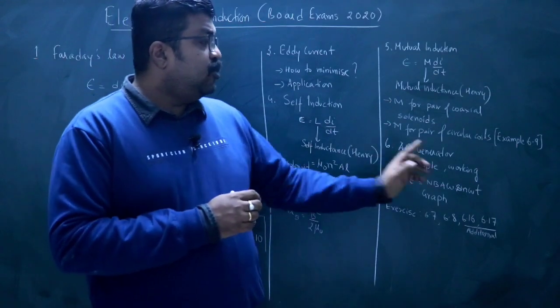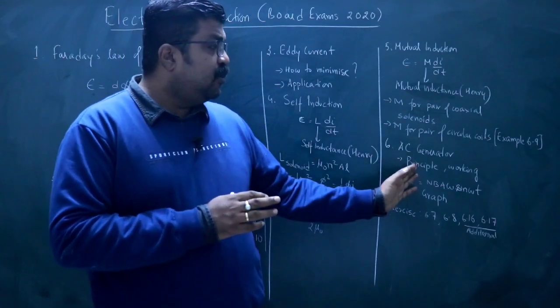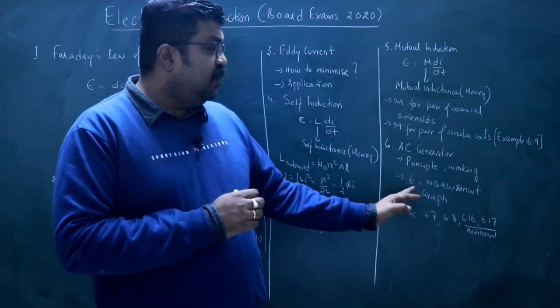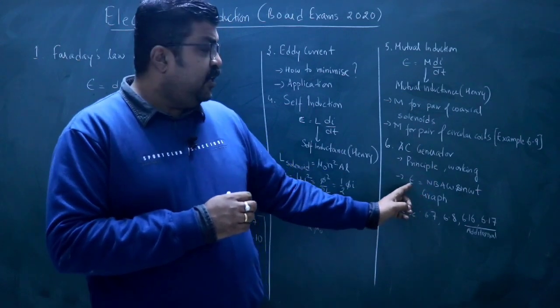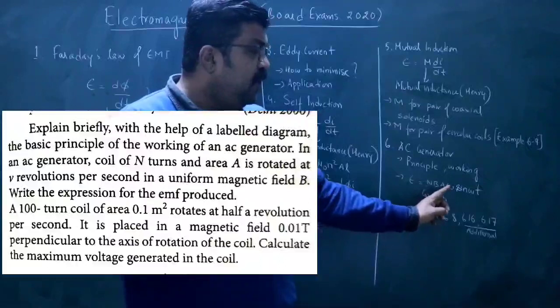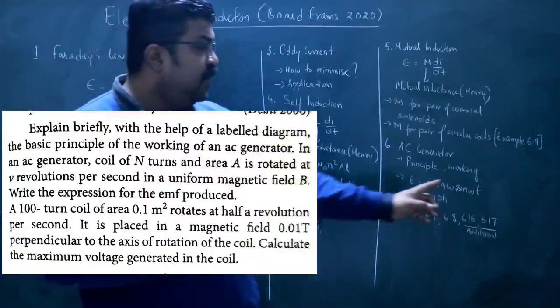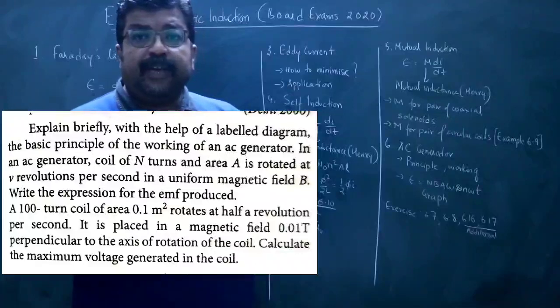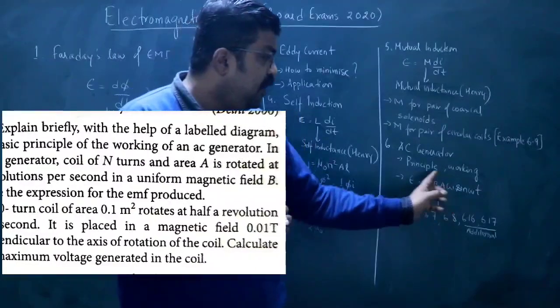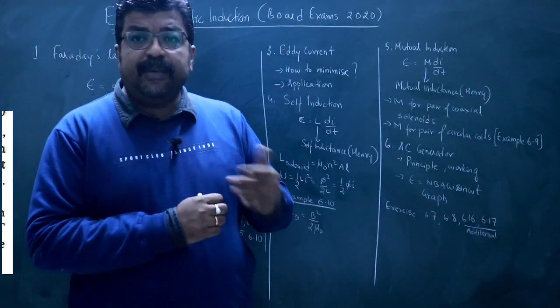Then the last topic here is AC Generator. So what is the working principle of AC Generator? How does it work? So working and principle are the two things you have to learn. The mathematical deduction here is E is equal to N B A omega sin omega t. So here N is total number of turns, B is the strength of the magnetic field, A is the cross-sectional area, omega is the angular velocity with which the coil is rotating. So this expression N B A omega is your peak EMF.